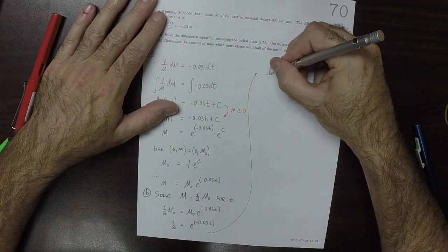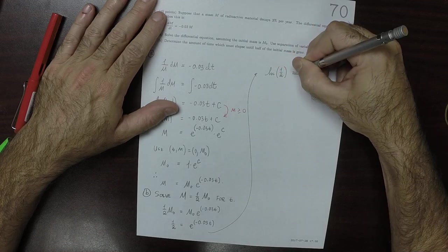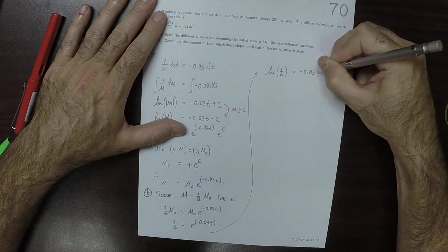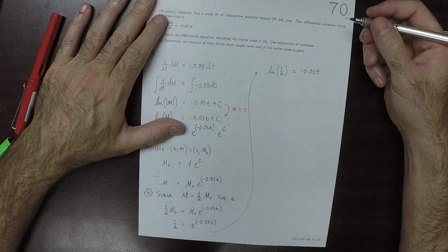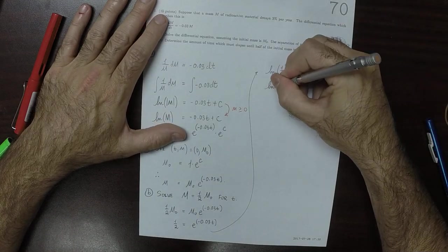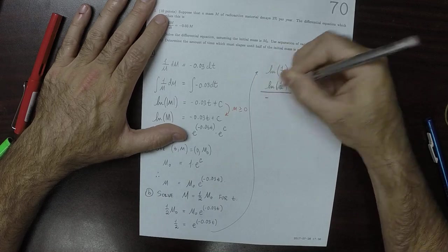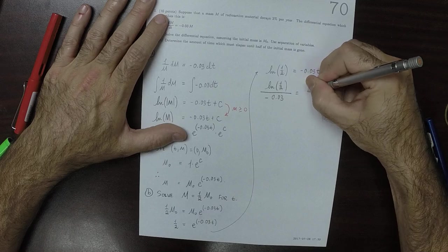So the logarithm of a half is negative 0.03 dT. So the logarithm of a half divided by negative 0.03 is the time we're looking for.